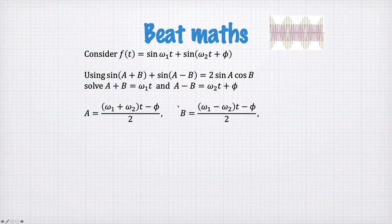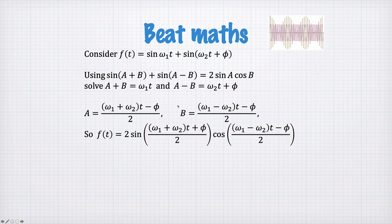And doing this, we get these equations here for A and B, and substituting in, we can now write our function f as a product of a sine and a cosine.